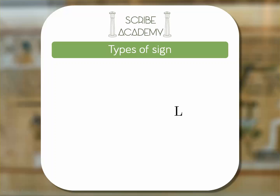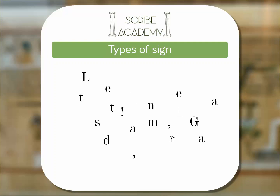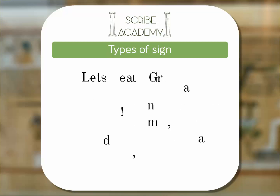In the English language we use two types of signs when writing: the 26 letters of our alphabet and punctuation. Letters make up words which then make up sentences, and the punctuation helps us to organize and make clear these strings of words.